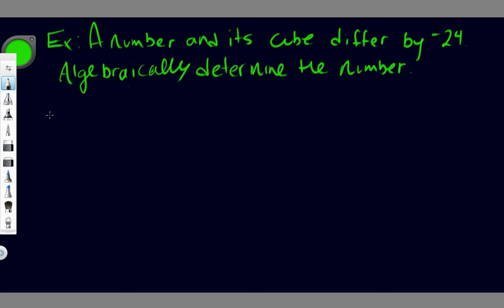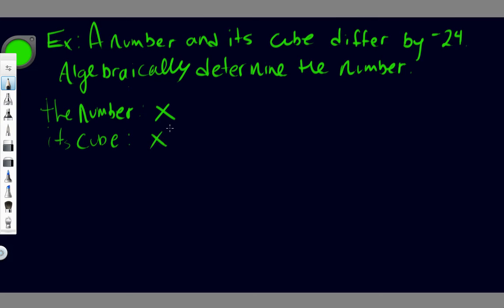It's really important to state what variable you're using. So we're going to say that the number is x. Its cube is therefore x cubed. The question says a number and its cube differ, so that means x minus x cubed, and they differ by negative 24. So we end up with: x minus x cubed equals negative 24.